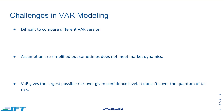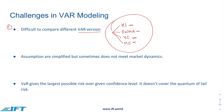Before we discuss qualitative risk measures, let's discuss some challenges in VaR modeling. The first challenge is that it is difficult to compare different VaR versions. There are a number of methodologies that can be adopted: historical simulation, Exponential Weighted Moving Average (EWMA), variance-covariance, and Monte Carlo simulation. The assumptions and methodologies for all these models are different, making it very difficult to compare VaR calculated under these different approaches.